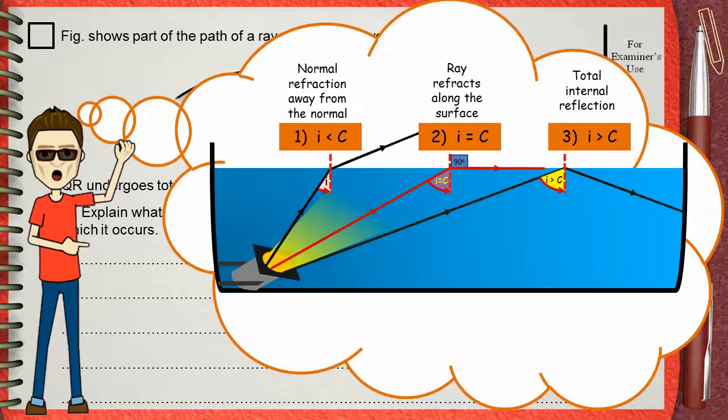Remember that this only studies rays that are coming from denser medium to rare medium. Rays that are coming from rare to dense have no critical angles and do not undergo total internal reflection.